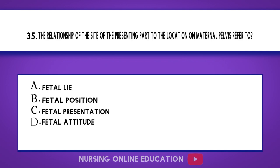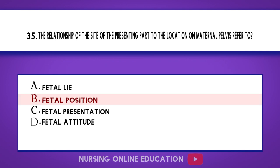Question 35. The relationship of the site of the presenting part to the location on the maternal pelvis refers to? A. Fetal lie. B. Fetal position. C. Fetal presentation. D. Fetal attitude. The answer is option B: Fetal position.